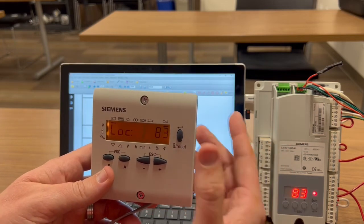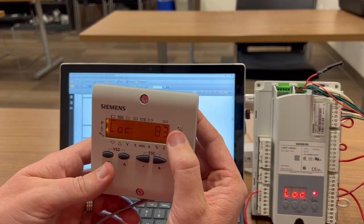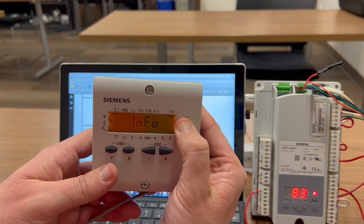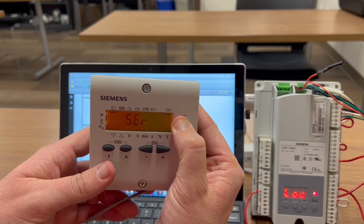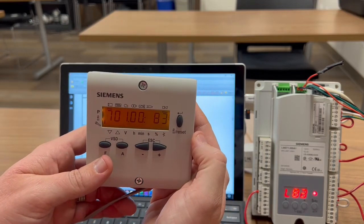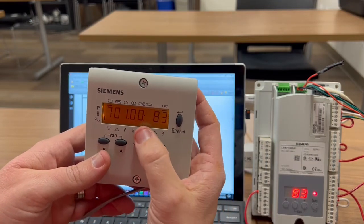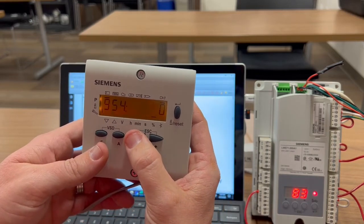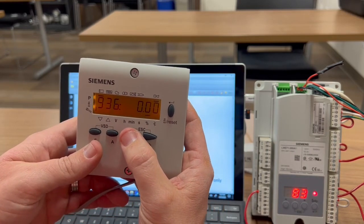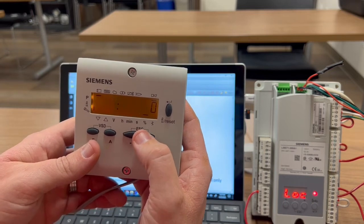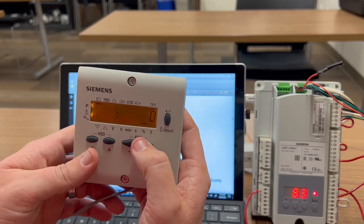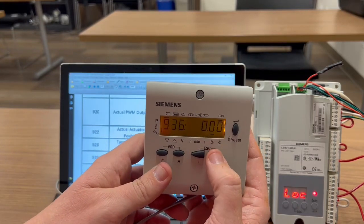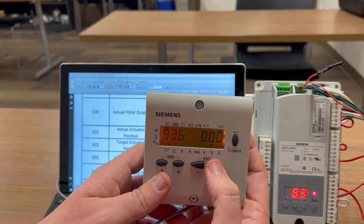Let me show you how to get into service mode. Take the enter button, press and hold until it reads SER for service mode. Let go. It starts with the 700 series, which is the fault history. I'm going to go back and go to 920. 920 reading actual PWM signal and 936 is the actual speed.